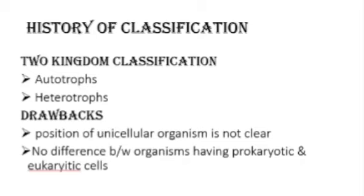The first main system of classification was the two kingdom classification. Scientists grouped organisms into two major categories: the first was autotrophs, which included plants that can prepare their food by themselves, and the second was heterotrophs, which cannot prepare their food and obtain it from autotrophs.